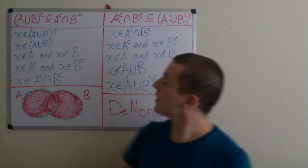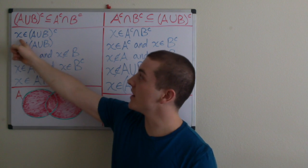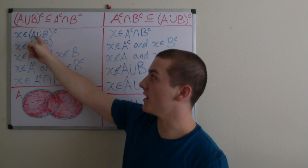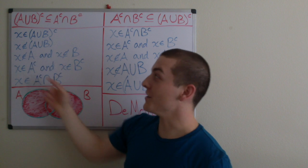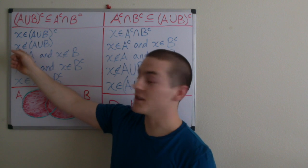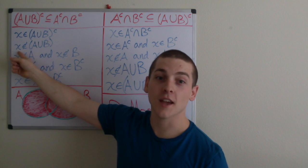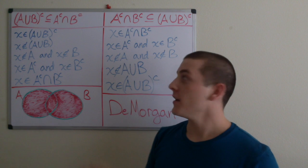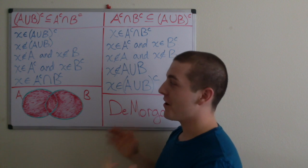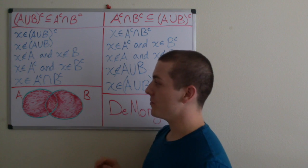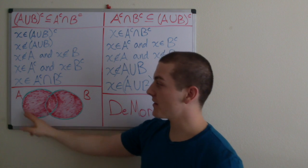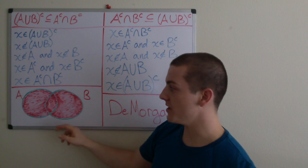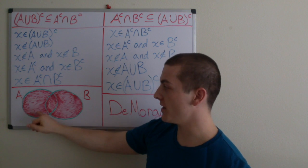Let's get started. Suppose that x is an element of A union B complement. If that's the case, then by definition, x is not an element of A union B. And if x is not an element of A union B — that is, if x is not an element of the region A union B, which is the red here —